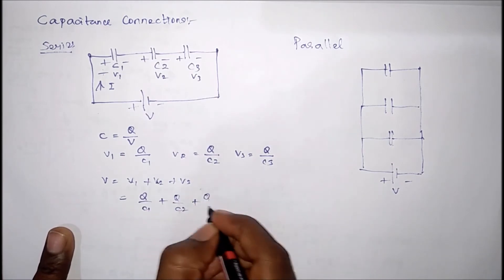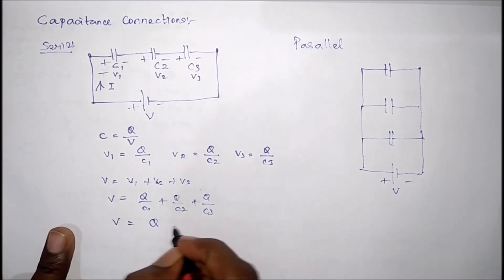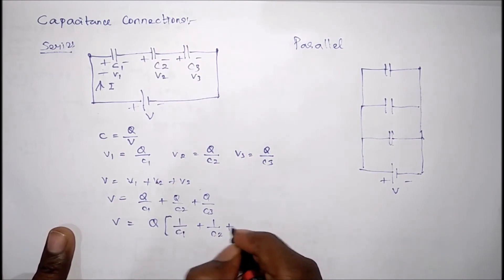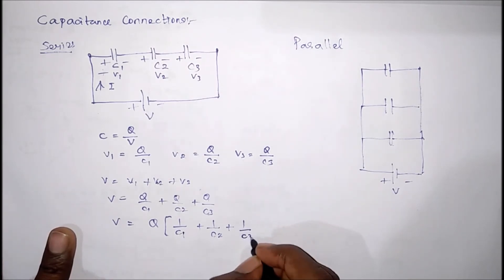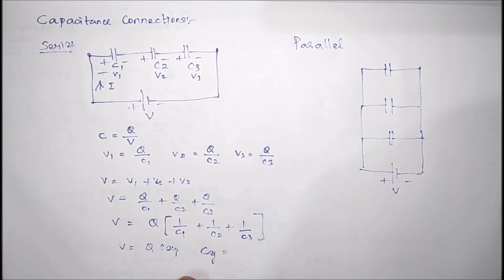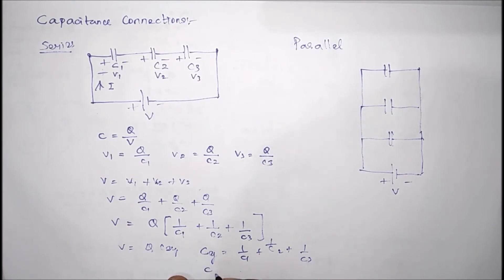So V equals Q/C1 plus Q/C2 plus Q/C3. Taking Q as common outside, we get V equals Q into (1/C1 plus 1/C2 plus 1/C3). We can say V equals Q into 1/C-equivalent, where 1/C-equivalent equals 1/C1 plus 1/C2 plus 1/C3. If there are n number of capacitances, this continues up to 1/Cn.